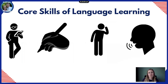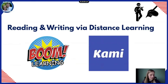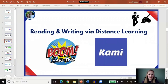We talked about the core skills of language learning. Reading and writing are pretty easy to implement when it comes to distance learning. Listening and speaking is a little bit trickier, so that's where we're going to spend the bulk of our time. The two resources for reading and writing are your Boom Learning cards and a resource called Kami. Let's go into Boom Learning first.